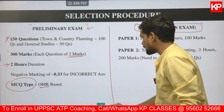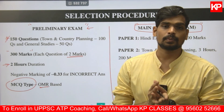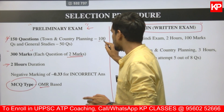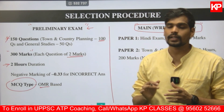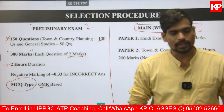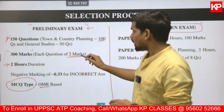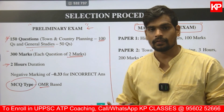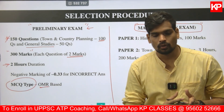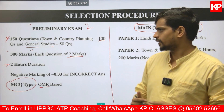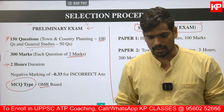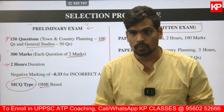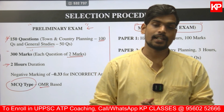One important point about the prelims exam: out of 150 questions, two-thirds — that is 100 questions — will be from urban planning and town and country planning, the core subject. The remaining 50 questions will be from general studies, which includes topics of polity, economy, geography, history of India, and the independence movement.